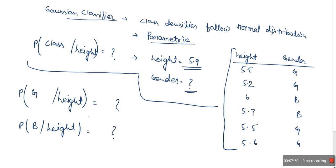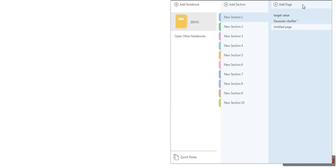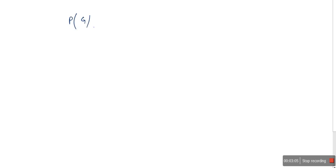Let me take another page. From the previous one, what we need to find out — we need to find out these probabilities. The data we are given includes height and gender.